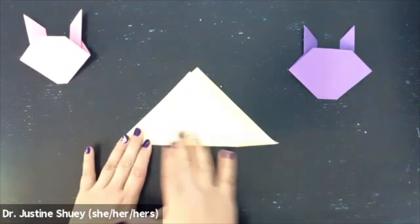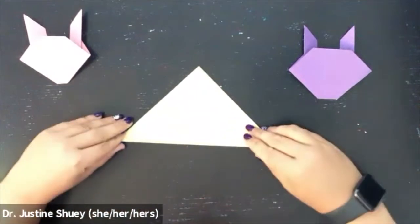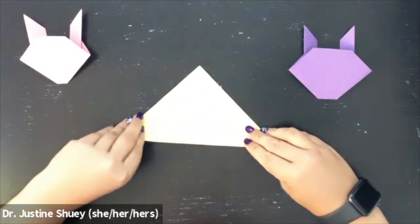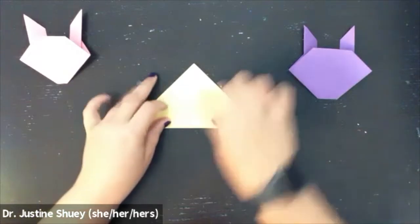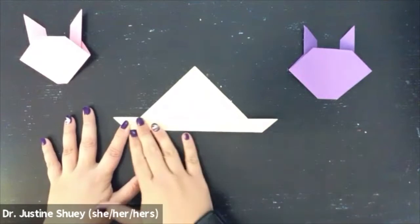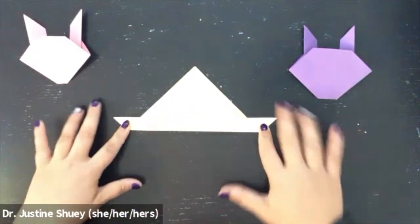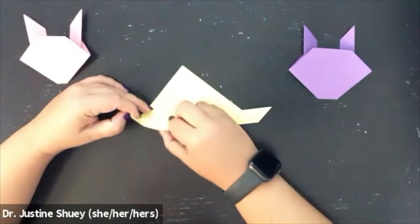Then we're going to fold the bottom of our paper up just a little bit. Now we're going to take both of those ends and we're going to fold them up to create our ears.